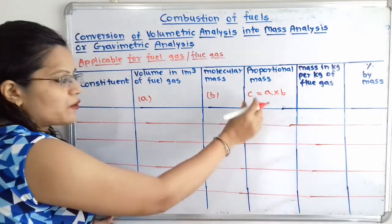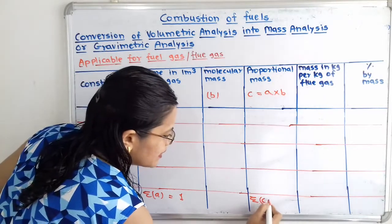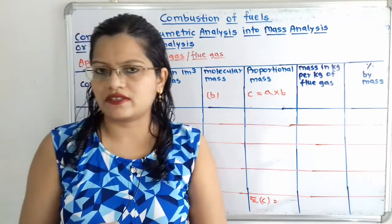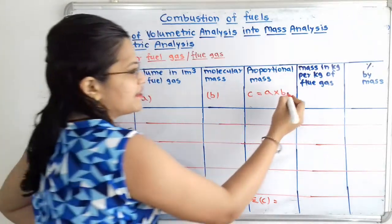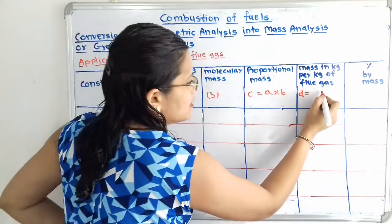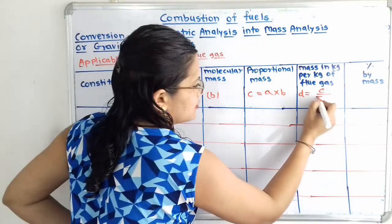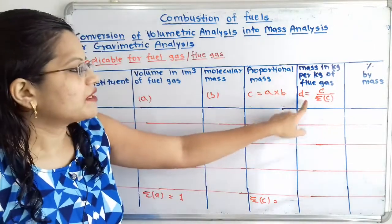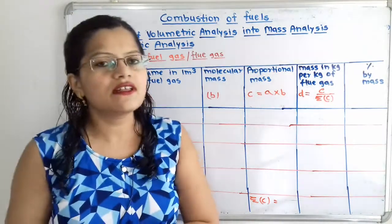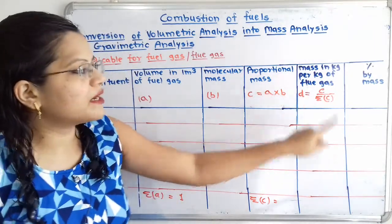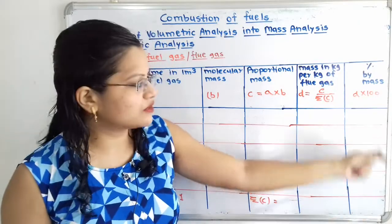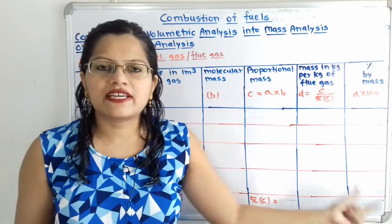We add all the proportional masses to get the summation of C, which we write in the last row. Next is mass in kilogram per kilogram of flue gases, called letter D, calculated as D = C divided by summation of C. Finally, percentage by mass is D multiplied by 100. All the numbers in this last column give us the final answer.